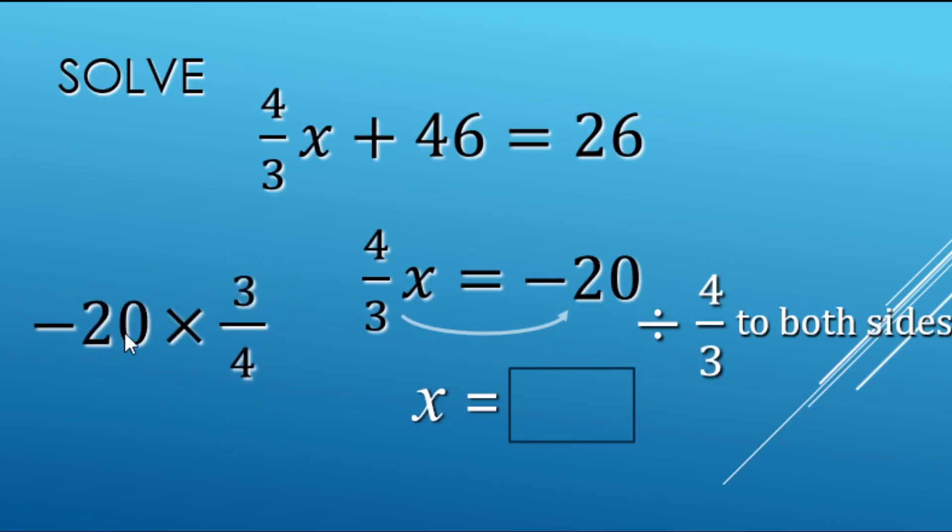So now if we have an integer times a fraction, it's basically going to be divide by 4 and multiply by 3. So here we go.